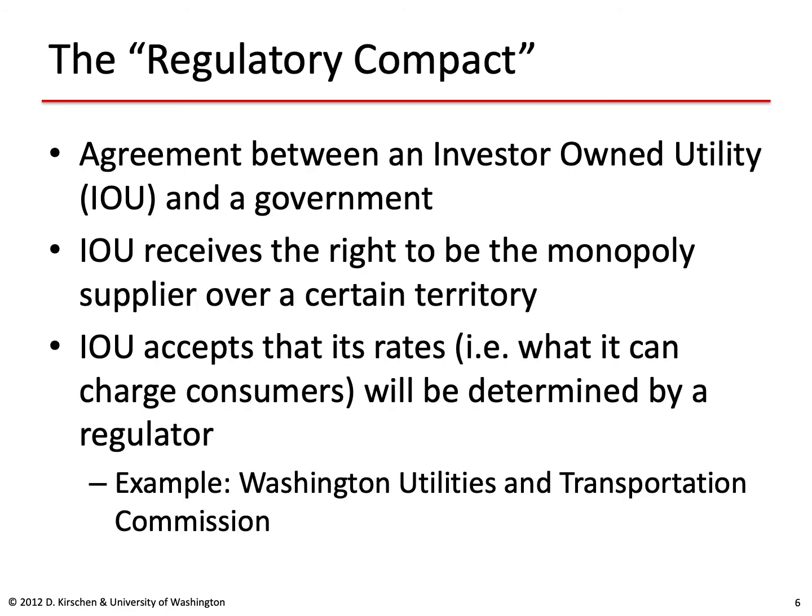The basis of regulation is what's called the regulatory compact — an agreement between an investor-owned utility and the regulatory agency in charge of regulating it. On the one hand, the investor-owned utility receives the right to be the monopoly supplier of electricity over a certain territory. In return, it accepts that its rates — meaning what it can charge consumers for electricity — will be determined by the regulator. For example, in the state of Washington, rates that investor-owned utilities can charge are set by the Washington Utilities and Transportation Commission.